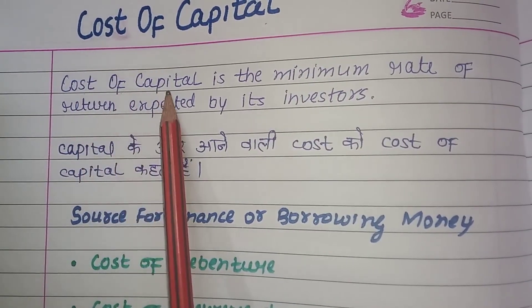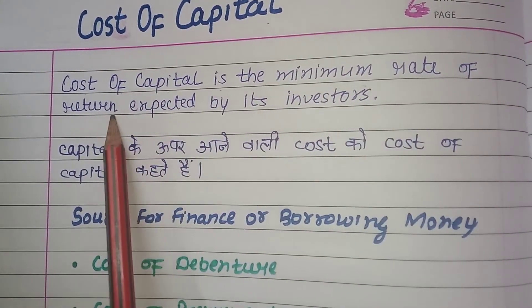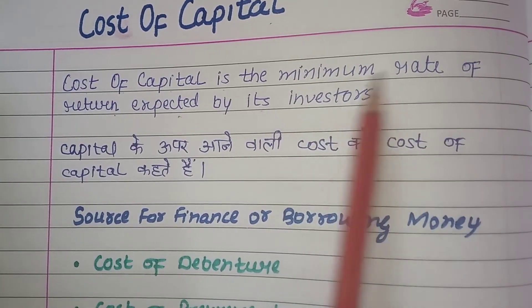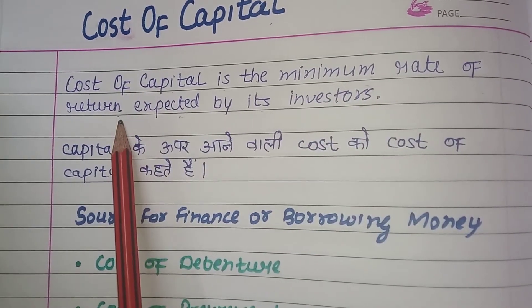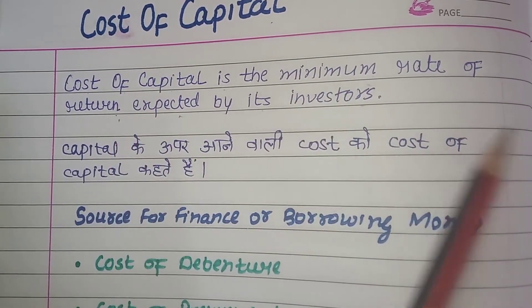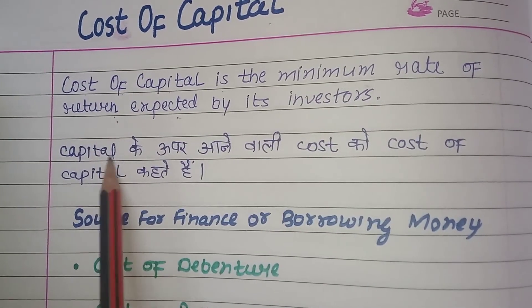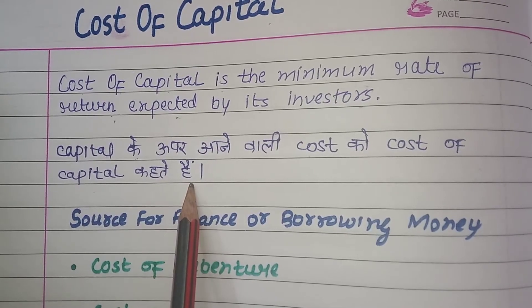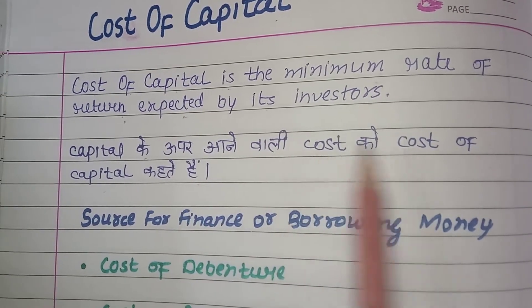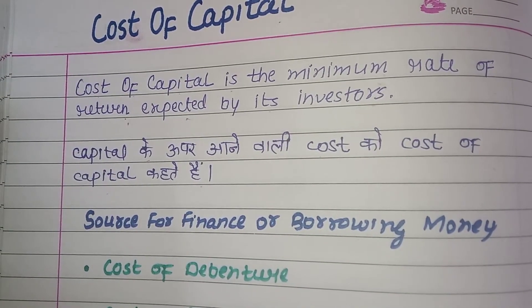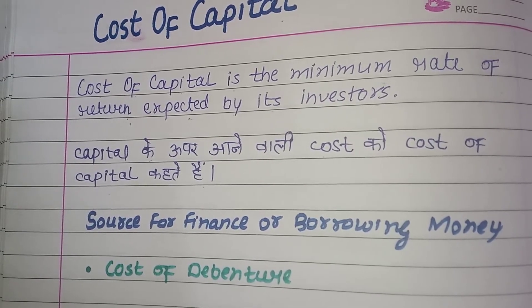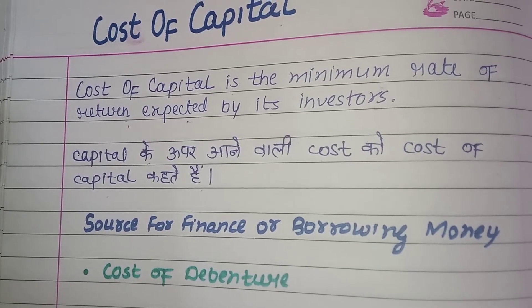Cost of capital is the minimum rate of return expected by its investor. Cost of capital kya hai? Minimum rate of return hai jo ki investor expect karta hai. Yeh capital ke upar aane wala cost ko cost of capital kehte hai. Capital ke upar aane wala kharcha, as known as cost of capital.